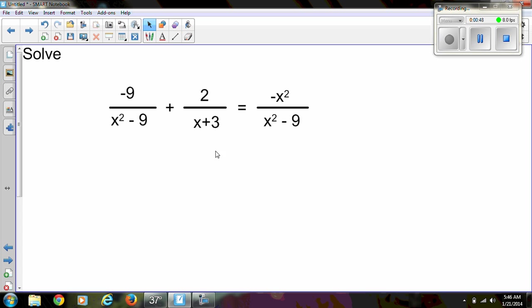Go ahead and pause the video and write the problem down and we'll get going. When solving rational equations, the key or goal is to get rid of all the variables in the denominator. We cannot solve for x as long as it's down in the denominator, so we're going to do that by clearing out the fractions. We're going to do that by multiplying each term by the LCD.